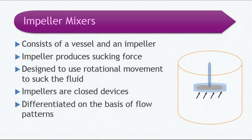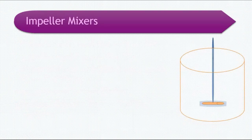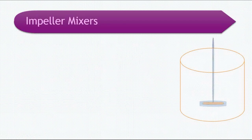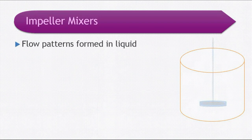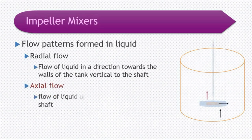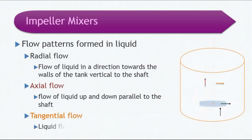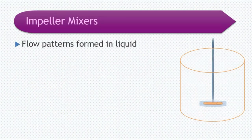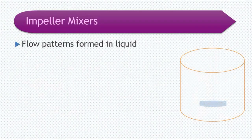Impellers are differentiated on the basis of flow patterns produced by their physical shape. If you change the shape of the impeller, the flow pattern produced in the liquid also changes. The various flow patterns formed in the liquid are either radial flow, axial flow, or tangential flow — or many times a combination of these.